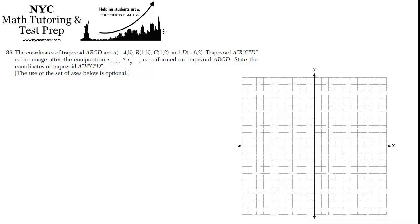The coordinates of trapezoid ABCD are as such. Trapezoid A B C D double prime is the image after the composition reflection over the x-axis and reflection over the line y equals x is performed on the trapezoid ABCD. State the coordinates of ABCD double prime.